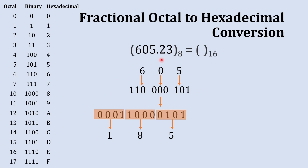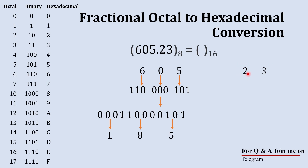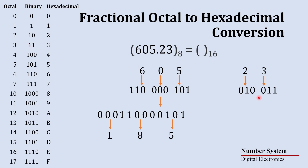Now we handle the fractional number part, .23. The process remains the same, but for the fractional part we start from the left and move to the right. The binary equivalent of 2 is 010, and the binary equivalent of 3 is 011. Combining these gives us 010 011.